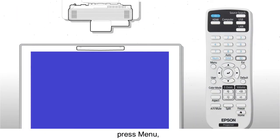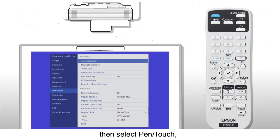To calibrate the pens, press Menu, then select Pen Touch, and Auto Calibration.